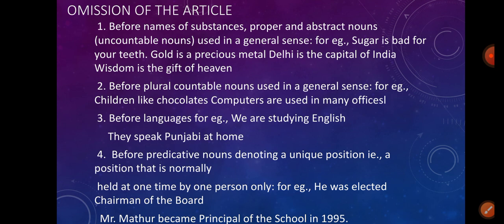Before predicative nouns denoting a unique position — that is, a position normally held by one person only. For example: he was elected chairman of the board; Mr. Mathur became principal of the school in 1995.